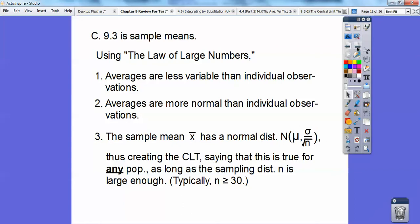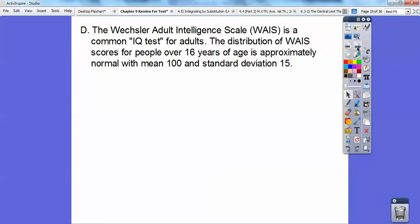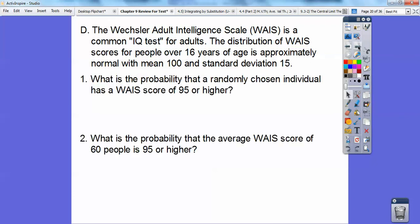Let's try some of these. So the Weschler Adult Intelligence Scale, the WAIS, is a common IQ test for adults. The distribution of the WAIS score for people over 16 years of age is approximately normal with mean 100 and standard deviation 15. What's the probability that a randomly chosen individual has a WAIS score of 95 or higher? This is individual.